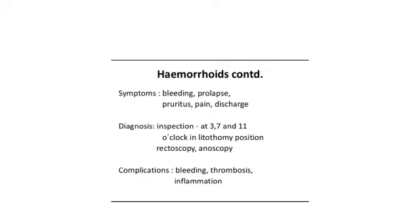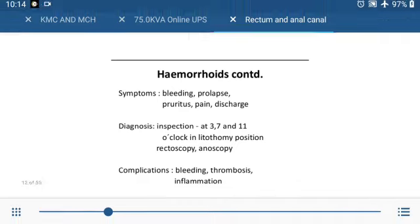Diagnosis is by inspection; hemorrhoids are seen at 3, 7, and 11 o'clock in the lithotomy position. They can also be identified by rectoscopy or anoscopy. Major complications include bleeding, thrombosis, and inflammation.